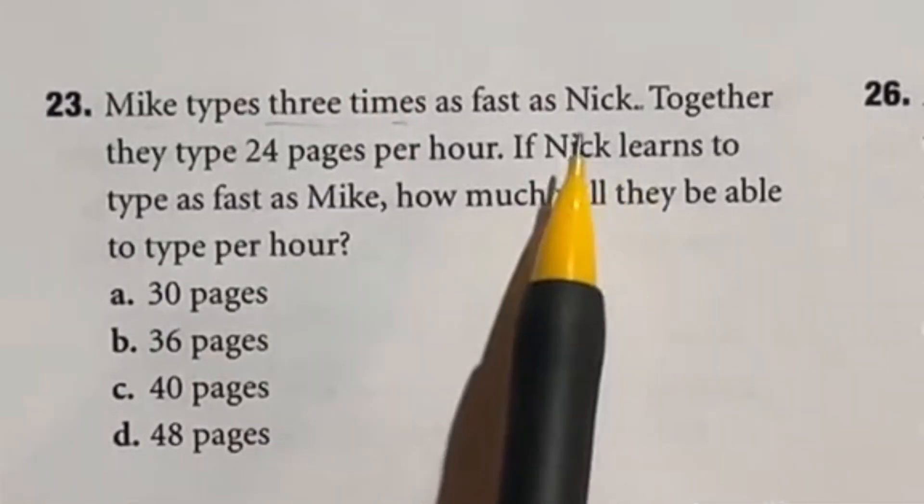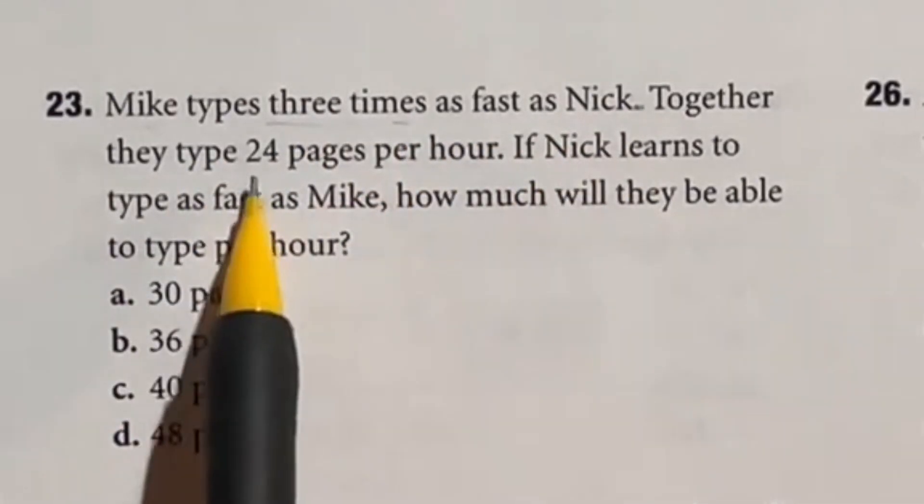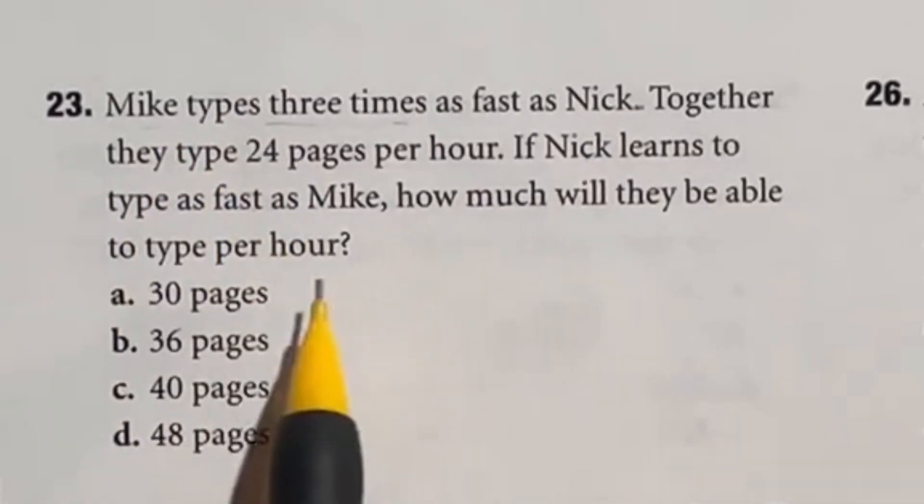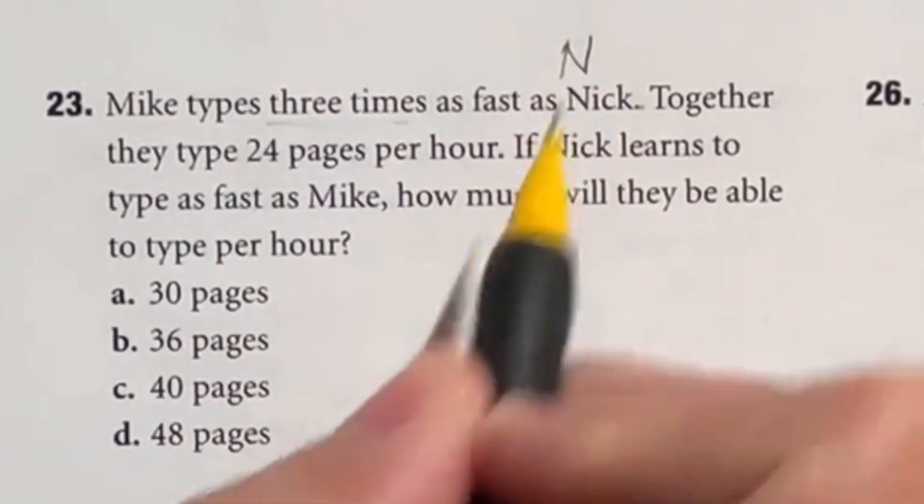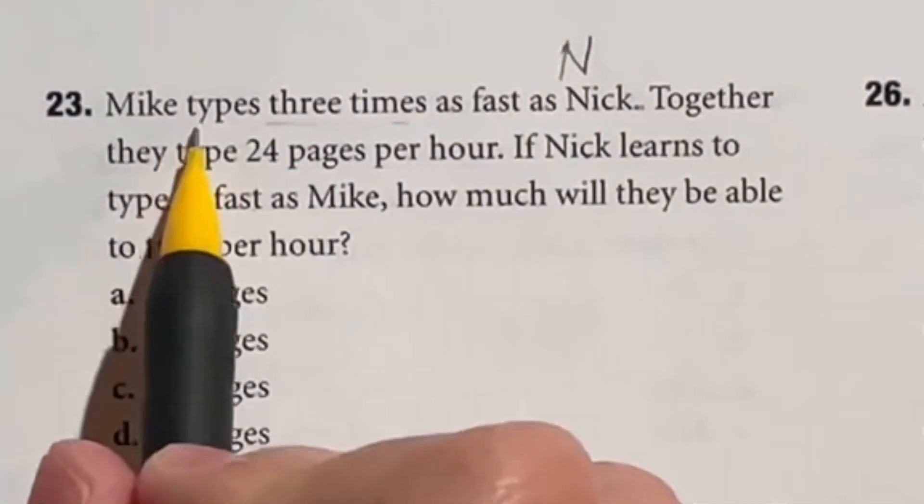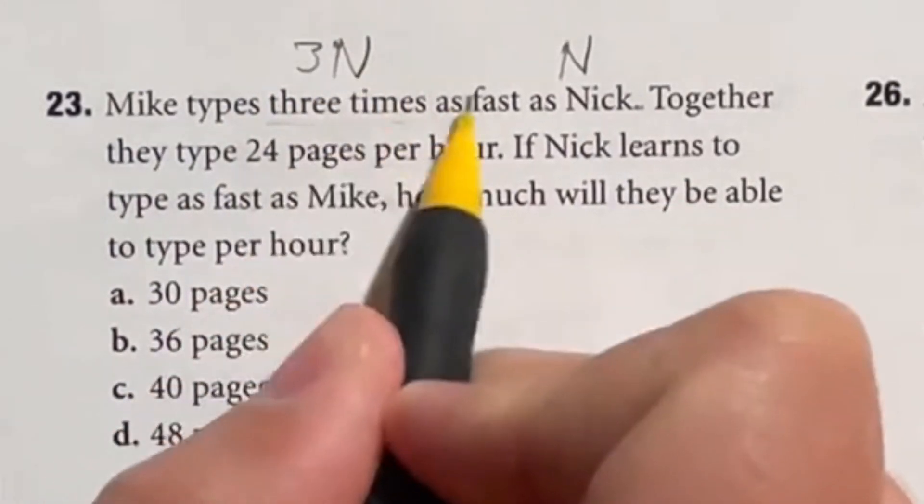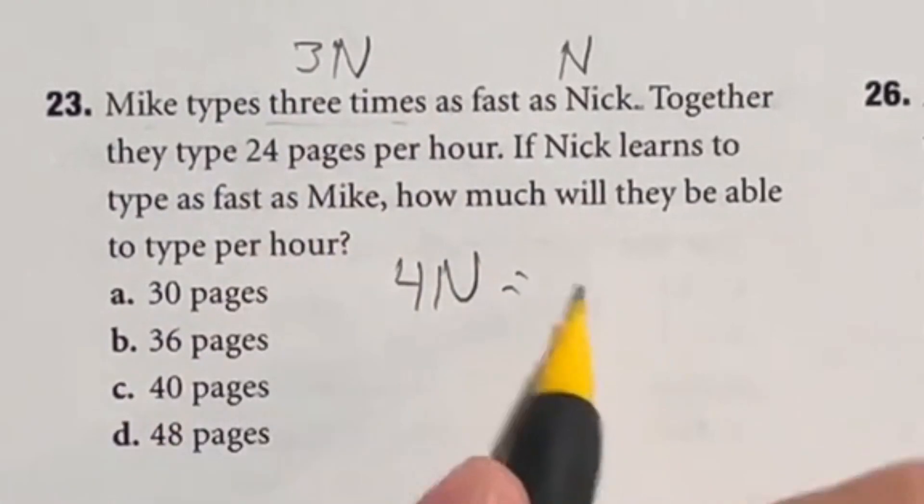The key of this question is that Nick sucks at typing. It says here that Mike types three times faster than Nick. Together they do 24 pages per hour. If Nick learns to be as fast as Mike how many will they be able to do per hour? Well let's take a look here. First off let's say Nick his numbers right here is n. Well Mike is three times as fast as that so that means Mike is 3n. Well if we add their two together that gives us 4n which is going to be equal to those 24 pages that they do.